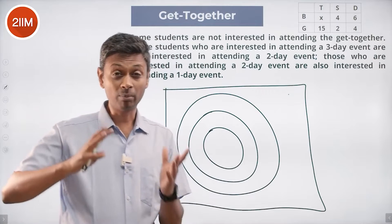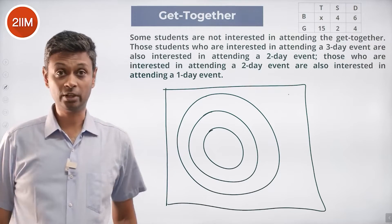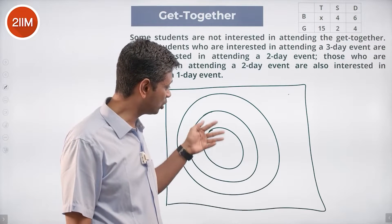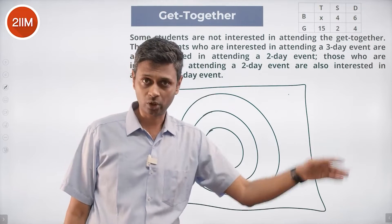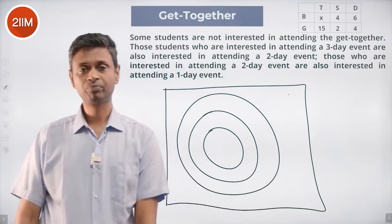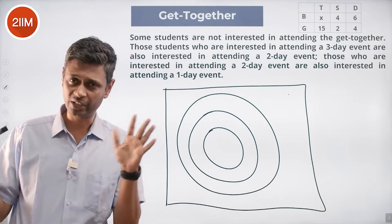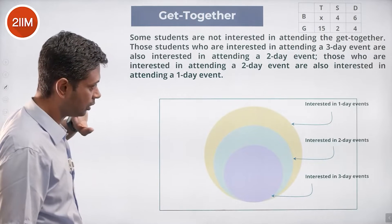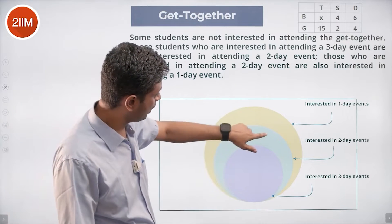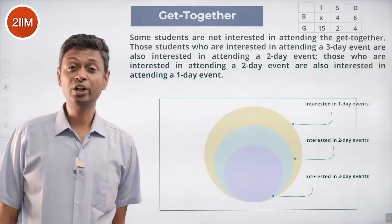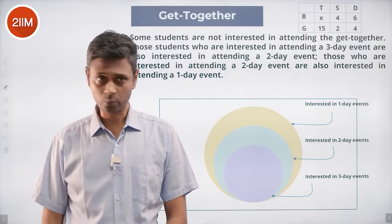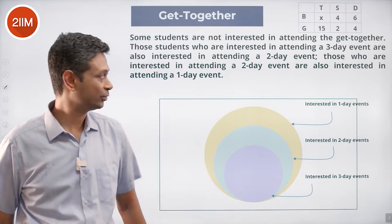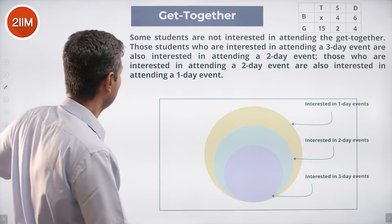There will be boys and girls in each region, and the singer-dancer classification adds another layer. There's one hierarchy: three-day, two-day, one-day, and none at all; then boys and girls; then singers and dancers. Originally I drew circles and it didn't work out well. Ragu had the idea of doing it differently, and it looks much better — so thanks to that approach.